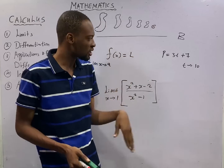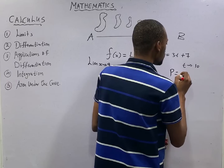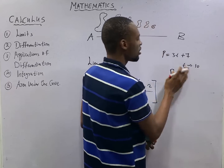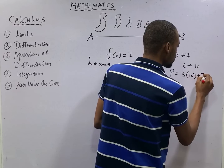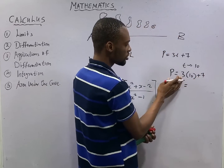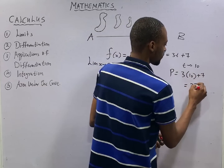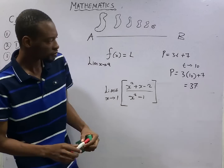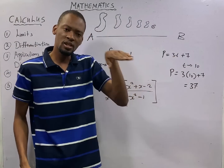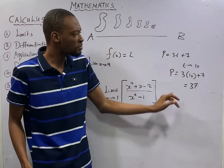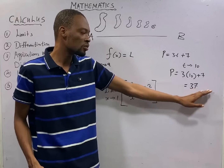In this case, you simply substitute t = 10 anywhere you see t: 3 times 10 plus 7 gives you 30 plus 7, which is 37. You are lucky because although t is not 10, it is only approaching 10, you are able to substitute 10 and you got a good answer.